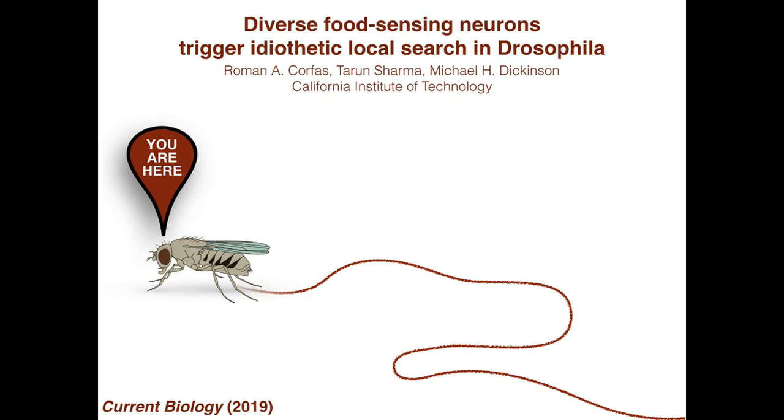This video abstract summarizes the findings from our paper, Diverse Food Sensing Neurons Trigger Idiothetic Local Search in Drosophila.